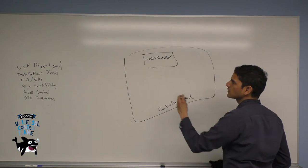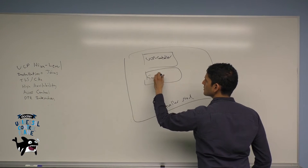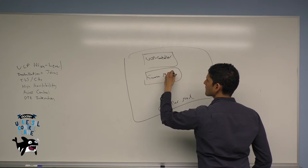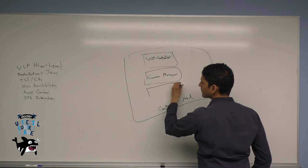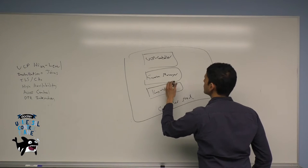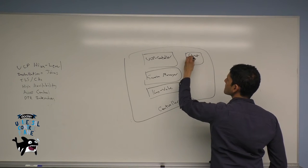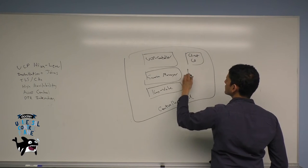Within that node, you have a UCP controller, you have a swarm manager, you have a key value store, and you also have a pair of certificate authorities, the client CA and the cluster CA.